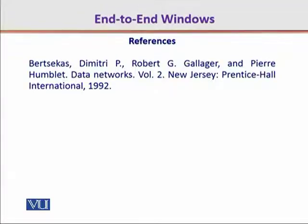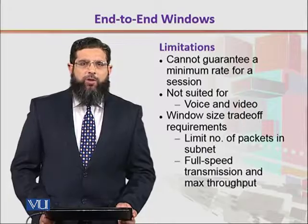The classical book by Gallagher and Bersicus titled 'Data Networks' is highly recommended for students who are interested in pursuing network modeling, which helps them to understand more quantitatively the underlying processes and operations going on in the internet.